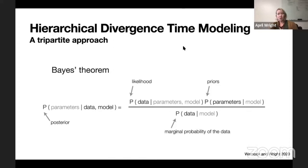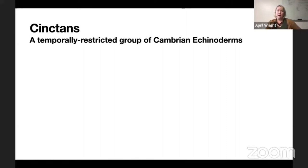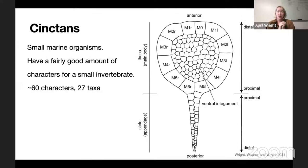In the case of the fossilized birth-death in a phylogenetic context, that equation looks something like this — and there's a lot of stuff on the screen, so it's a little bit tricky to deal with. We're going to take a look at how we can break this down usefully to do good model selection for each of our three hierarchical submodels. I'm going to present some results from an entirely paleontological dataset called the synctons — an extremely temporally restricted group of marine invertebrates found from about 510 million years ago to about 498 million years ago.